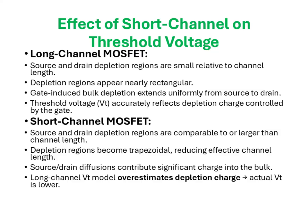Let us now see how short channel effects alter the threshold voltage itself. In a long-channel MOSFET, the depletion regions extending from the source and drain are relatively small compared to the overall channel length. Their boundaries remain almost rectangular, allowing the gate to maintain full control over the bulk depletion charge. However, as we move into short-channel regimes, the depletion regions of the source and drain expand and occupy a significant fraction of the channel length. Instead of being rectangular, they merge in a trapezoidal fashion, effectively reducing the channel length under the gate's control. This geometric change causes source and drain diffusions to induce additional charge in the bulk, meaning the gate does not need to supply as much depletion charge as predicted by long-channel theory.